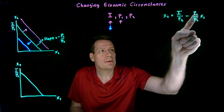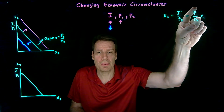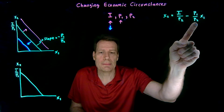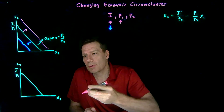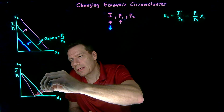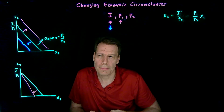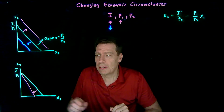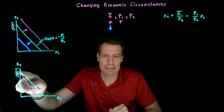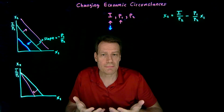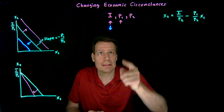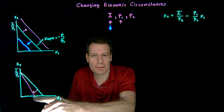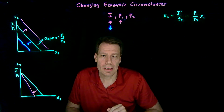If the price of good 1 goes up, the numerator in this fraction goes up, so the absolute value of the slope increases — meaning a steeper slope. An increase in the price of good 1 creates a steeper slope but doesn't change the intercept, so we get an inward rotation of the budget line. That should make intuitive sense: if the price of good 2 isn't changing and only the price of good 1 changes, then if all you buy is good 2 you can still buy exactly the same quantity. But if you buy good 1, an increase in its price means you can buy less now than before.